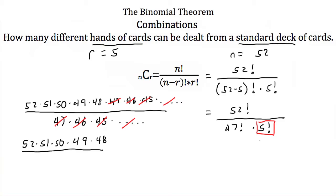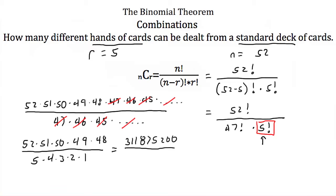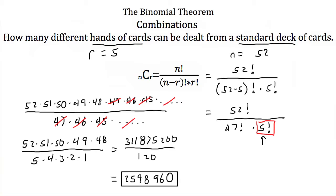All we're left with is 52 times 51 times 50 times 49 times 48, still divided by 5 factorial, which is 5 times 4 times 3 times 2 times 1. Our numerator, 52 times 51 times 50 times 49 times 48, equals 311,875,200. Our denominator is 120. So we have 311,875,200 divided by 120, which equals 2,598,960. That means there are 2,598,960 different possible combinations of 5 cards that can be dealt from a standard deck of 52.